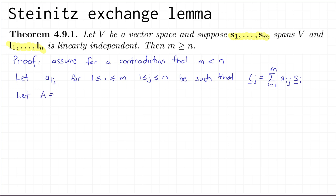We're going to put these a's into a matrix, so let A be the matrix with entries a_ij. This is an m by n matrix. The j-th column is telling you the scalars you need to express the j-th element of your linearly independent sequence in terms of the spanning sequence. So the entries in the j-th column are the ones appearing in that sum — they tell you how to express l_j as a linear combination of s_1 up to s_m.